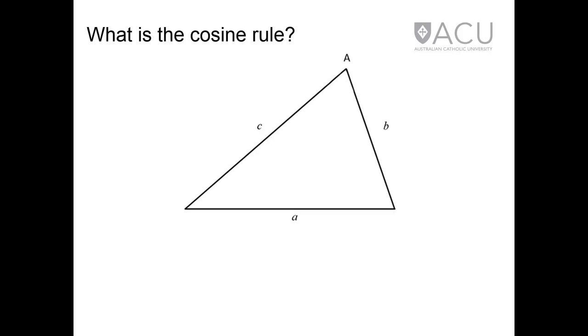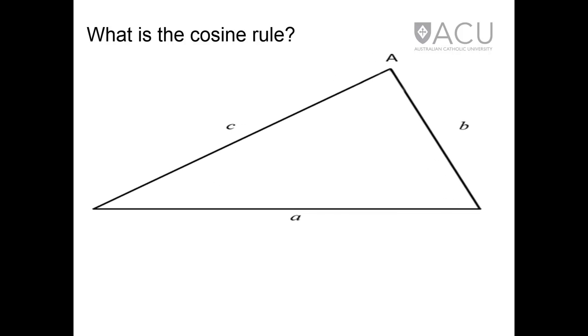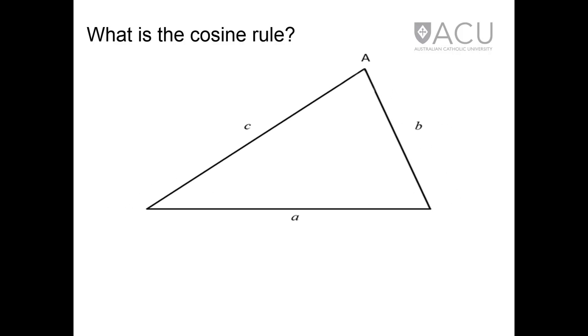Watch how the angle at the top of this triangle increases and decreases. As the angle changes, so does the length of the side opposite this angle. There is a special relationship between the cosine of this changing angle and the length of its opposite side. This is known as the cosine rule.